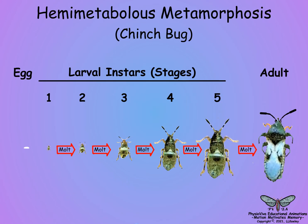Winged insect species are more advanced, with hemimetabolus and holometabolus metamorphosis. The larvae of hemimetabolus orders resemble adults but with small wing pads and no genitalia. Hemimetabolus larvae grow larger and have increasingly pronounced wing pads at each molt, and at the final larval-adult molt the resulting individual is full-sized and the wings are fully expanded.